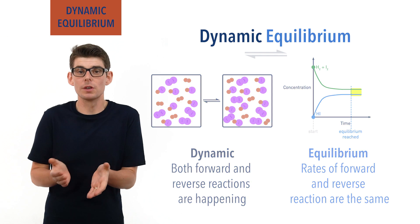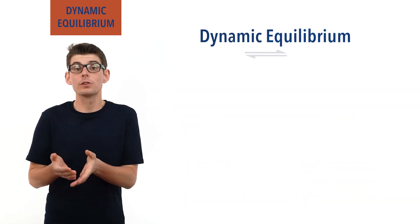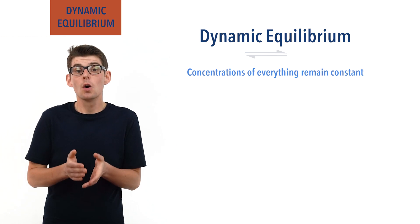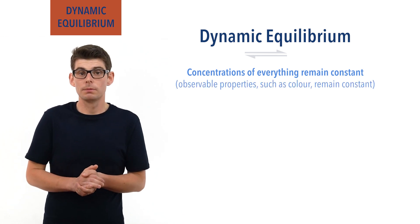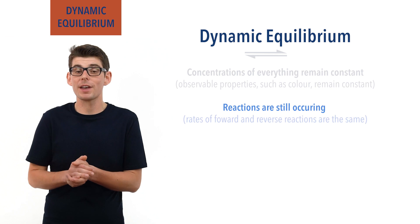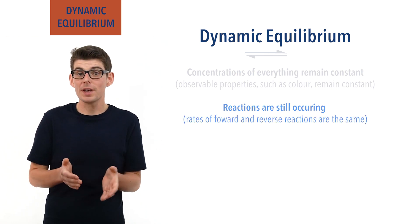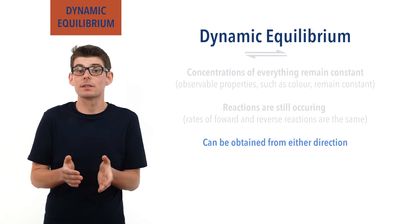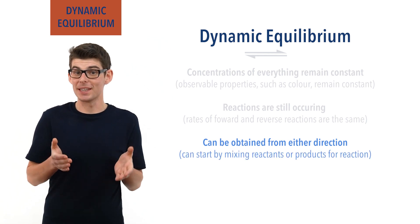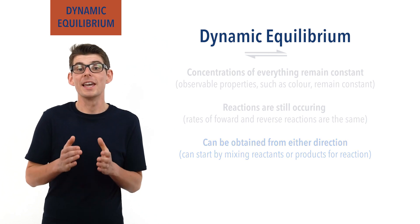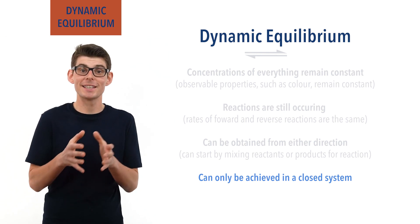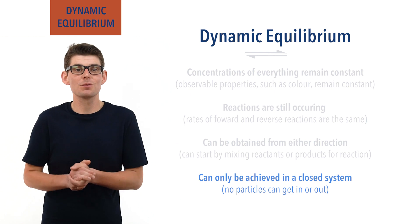There are four features of a dynamic equilibrium system. One: concentrations of everything in the system remain constant. As a result, observable properties like colour also remain constant and don't change. Two: reactions are still occurring, just in balance — the rates of the forward and reverse reactions are the same. Three: it can be obtained from either direction, meaning it doesn't matter whether you start with a mixture of reactants or products — dynamic equilibrium will still eventually be reached. Four: it can only be achieved in a closed system. No particles can be allowed to get in or out of a system if it is to reach dynamic equilibrium.